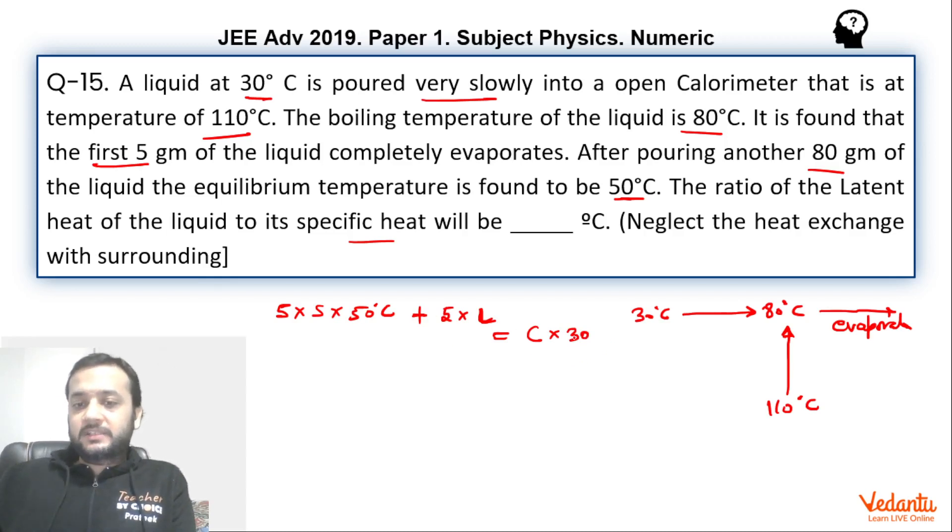So we can say that this much is the heat given by the calorimeter and this is the total heat accepted by the liquid. Now what happens?